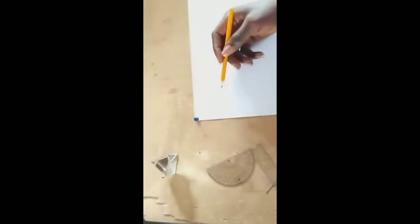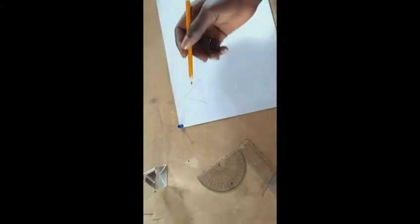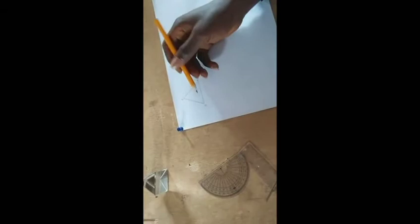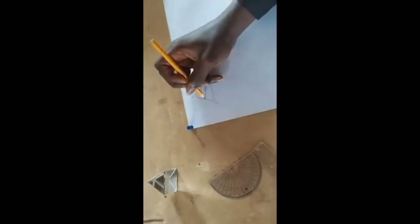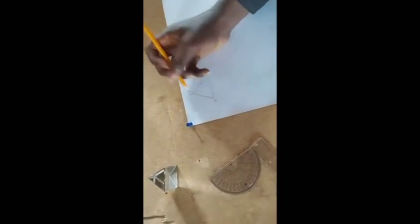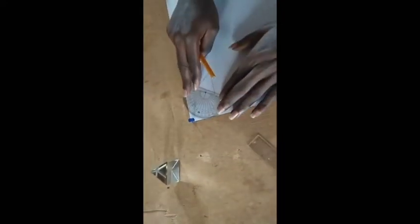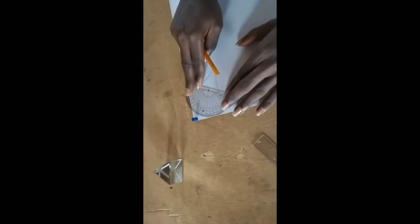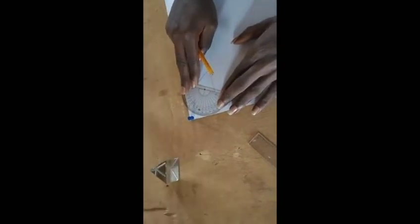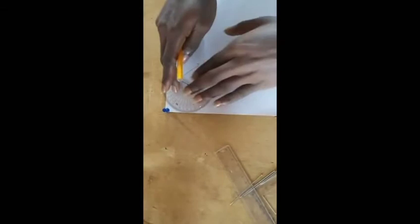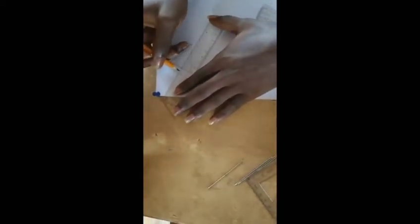On line AB, pick a point to draw the normal. You can pick the normal at any point. Take the protractor and make sure it's 90 degrees. Use your ruler to draw out the normal line.